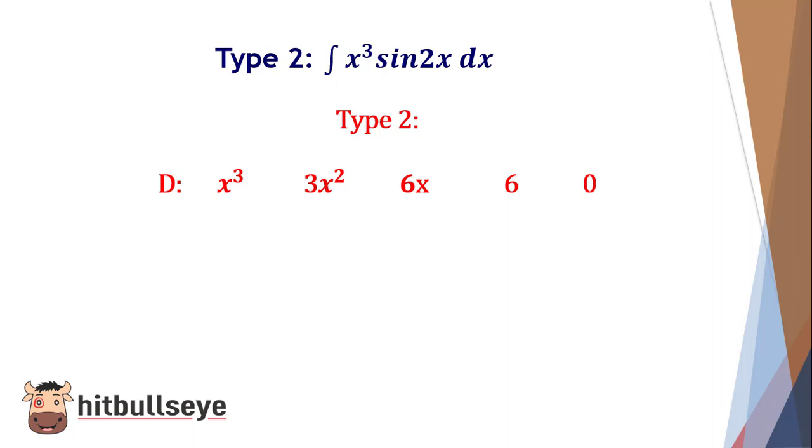Once you reach zero, you have to start integrating the second part, that is sin(2x). When you integrate this, you will get -cos(2x)/2. Again integrating that, you will get -sin(2x)/4, and so on.